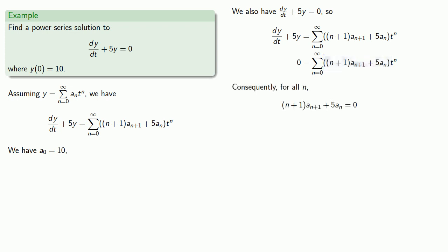But the only way for that to happen is that all of our coefficients have to be 0, and so we know that (n+1)a(n+1) plus 5an must be 0.